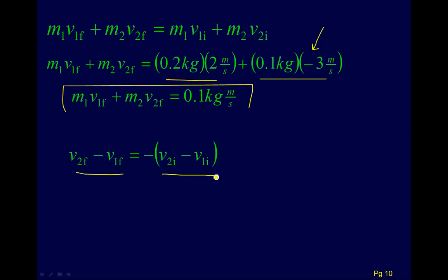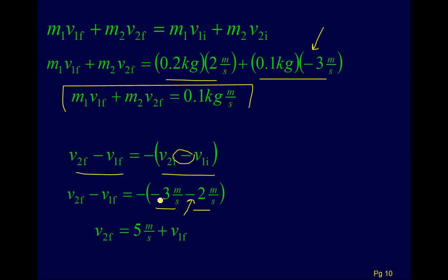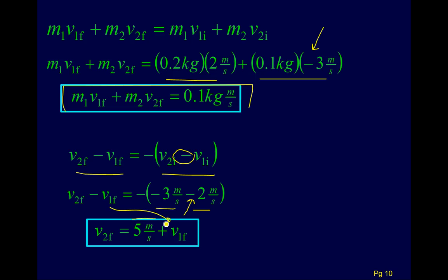With the new piece — relative velocities — we know everything about the initial velocities: V2 initial is −3 and V1 initial is +2. Be careful with the negative sign; it's easy to flip one and get an incorrect answer. So −3 minus 2 is −5, times a negative gives positive 5. We now have two equations and two unknowns, and the physics is done — it's just algebra from here.